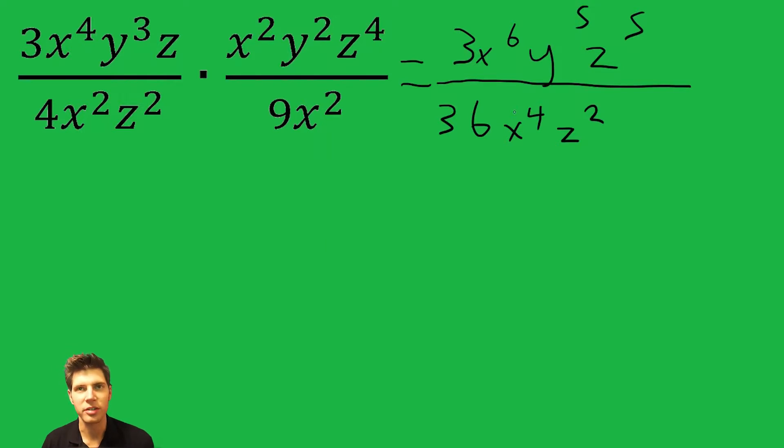Now we can start canceling from top and bottom. So 3 and 36, this reduces into 1 over 12, because they're both divisible by 3. Then x to the 6 and x to the 4. This means there's 6 on top and 4 on bottom. That's going to leave 2 on top. Another thing you can do is 6 minus 4.